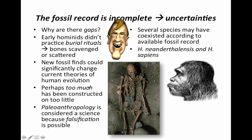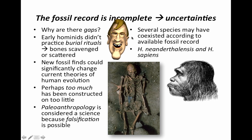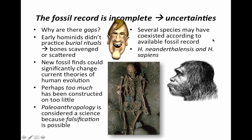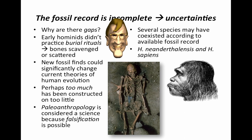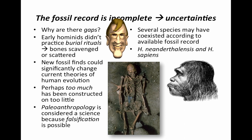From the fossil record and radioisotope dating, we think that several species may have coexisted at the same time — Neanderthal man and Homo sapiens. We have survived and are still around, so Homo neanderthalensis was not able to adapt as well.